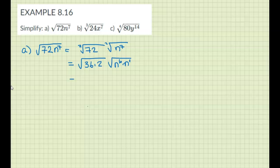Okay, so we have square root of 36 is 6, and then the 2 stays inside the radical. For this, the ends, I do n to the 6 divided by 2, which is 3, and then square root of n.